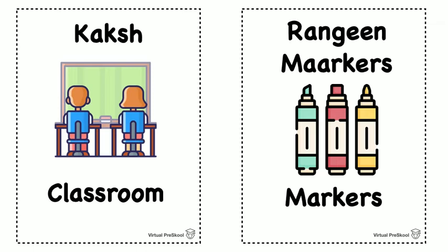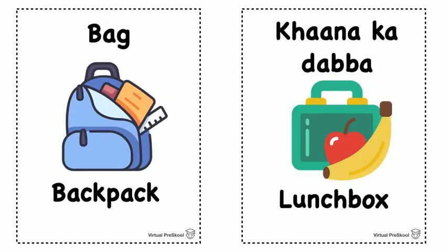For markers — like colorful markers that we use for coloring and drawing — we say markers but add the word rangin in front. Rangin means colored, so colored markers: rangin marker. Rangin marker. Bag is how they say backpack. Bag is backpack.